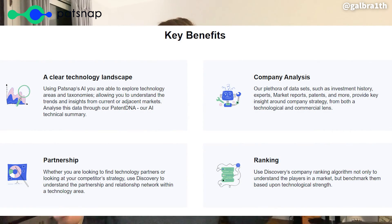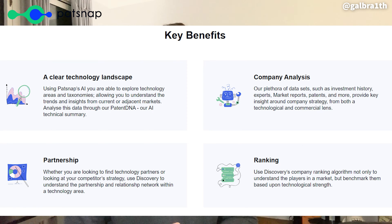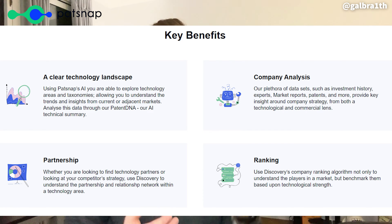PatSnap Discovery is a real-time R&D intelligence platform powered by AI, connecting millions of market, technology, and competitor data points so innovation teams can make better decisions in fast-moving markets. It gathers relevant scientific news, articles, and reports, and enables users to search in natural language for technology, industry, or company trends.